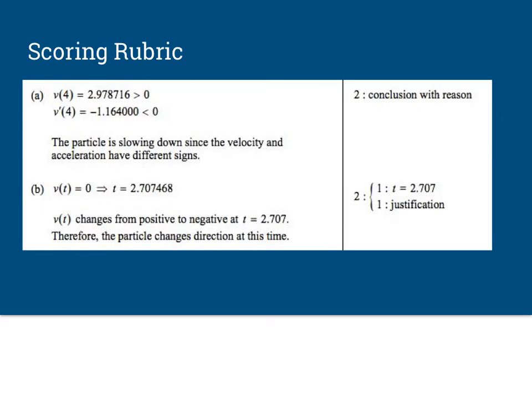Now looking at the solutions of these, we can see on letter A, you had to decide whether it was speeding up or slowing down. Now I just read recently, notice how you're given two points, conclusion with reason. Now you're not given one point if the conclusion is right and one point if the reason is right. No, actually you're only given the two points if both are right. So you had to say it was slowing down. And you had to compare the signs of velocity and acceleration. That's worth two points, no partials on this.